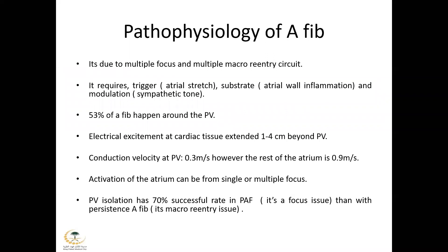The pathophysiology of atrial fibrillation involves multiple foci and multiple macro-reentry circuits — unlike atrial flutter, which has clear pathways. Three things need to happen: a trigger, a substrate, and modulation. Triggers include something that causes atrial stretch, such as valvular heart disease, mitral stenosis, or mitral regurgitation. The substrate is inflammation in the atrial wall. Modulation occurs when patients perform activities that increase sympathetic tone. When these factors work together, the patient goes into atrial fibrillation.